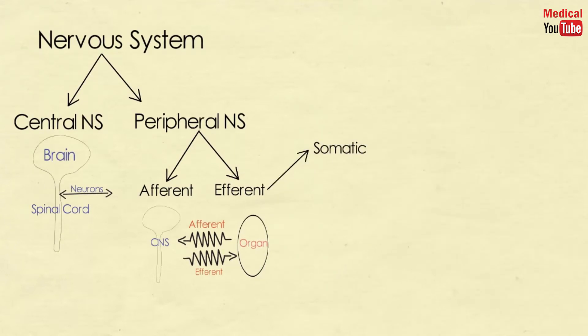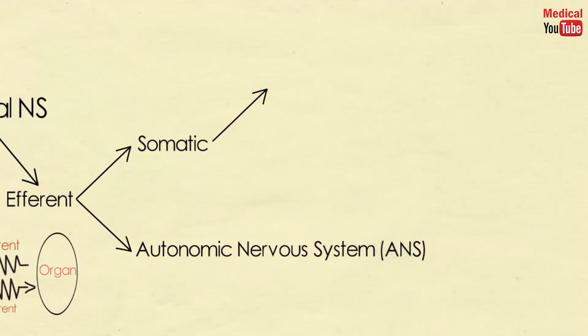The efferent portion of the peripheral nervous system is further divided into two major functional subdivisions: the somatic and the autonomic nervous system.